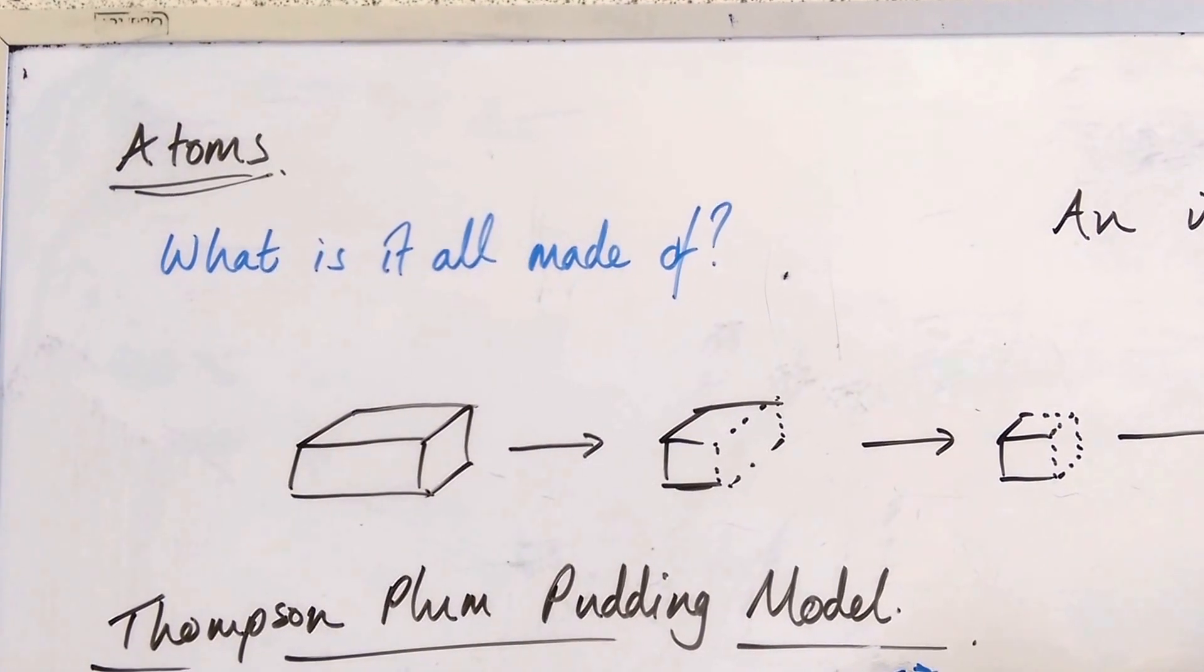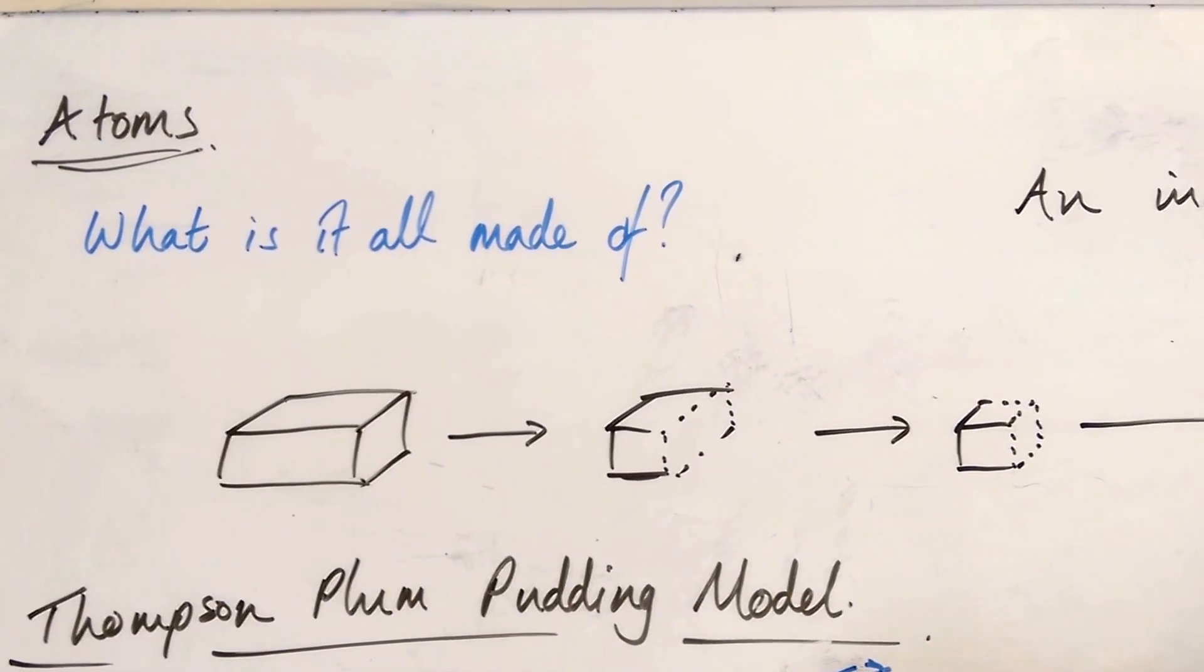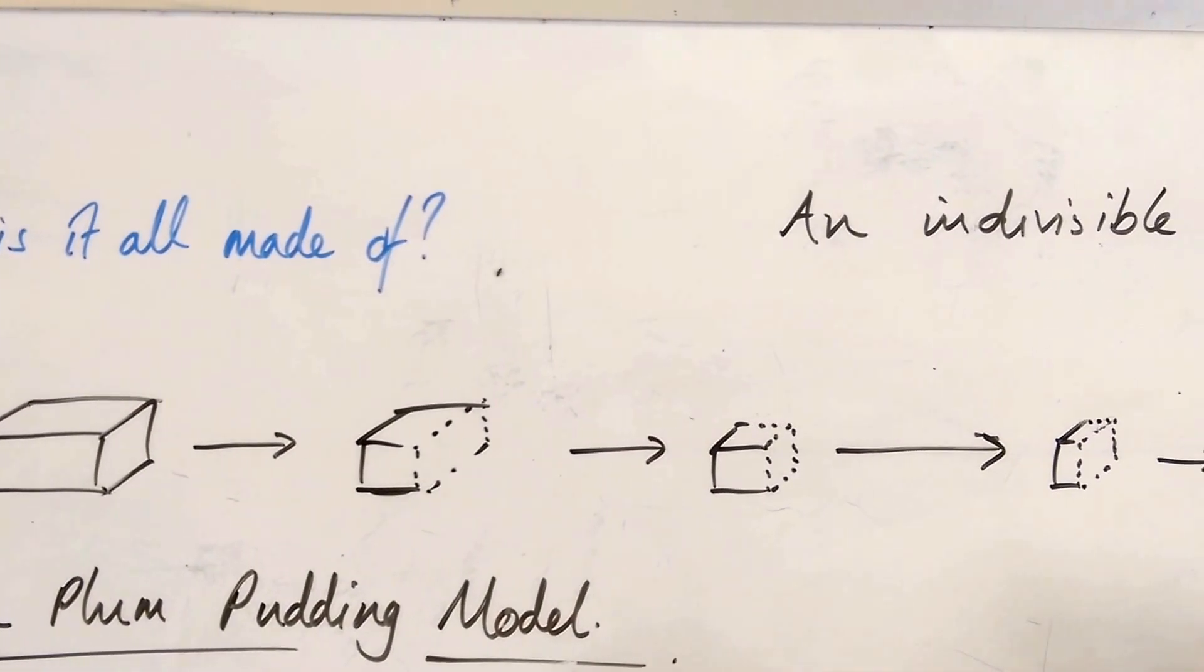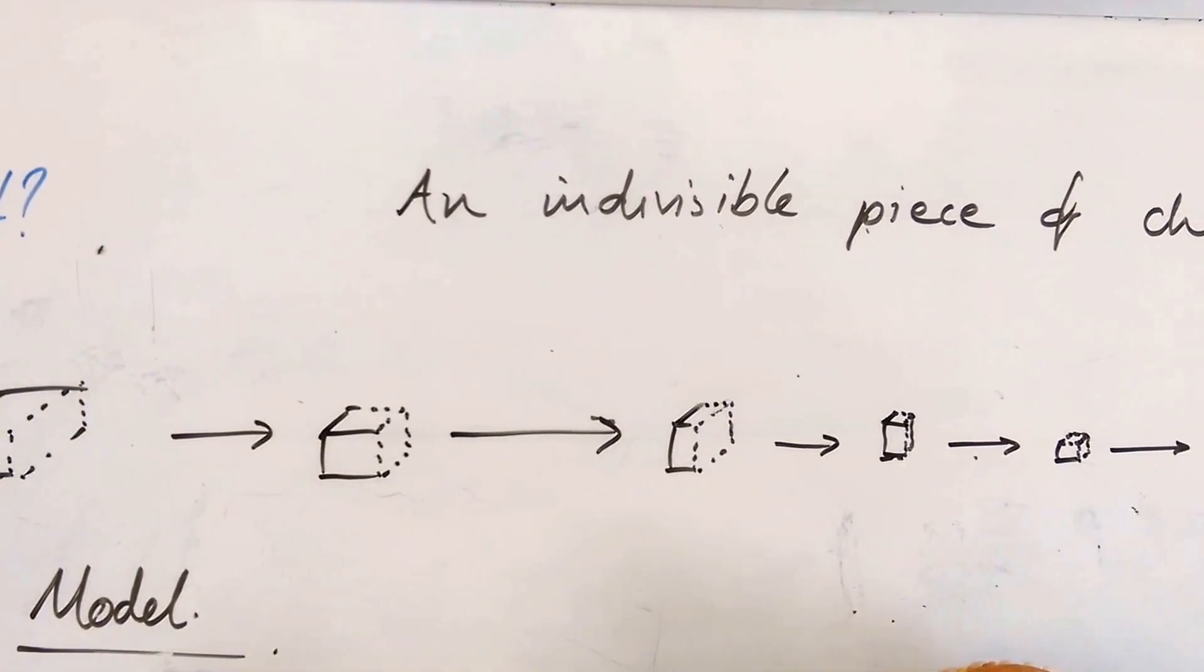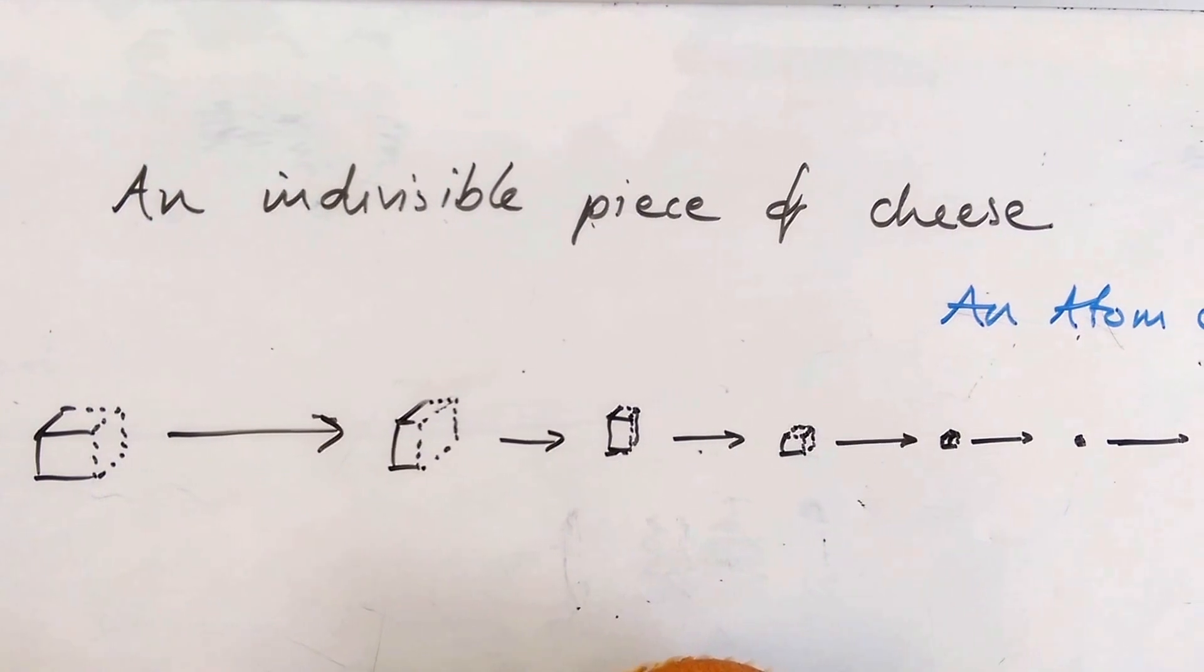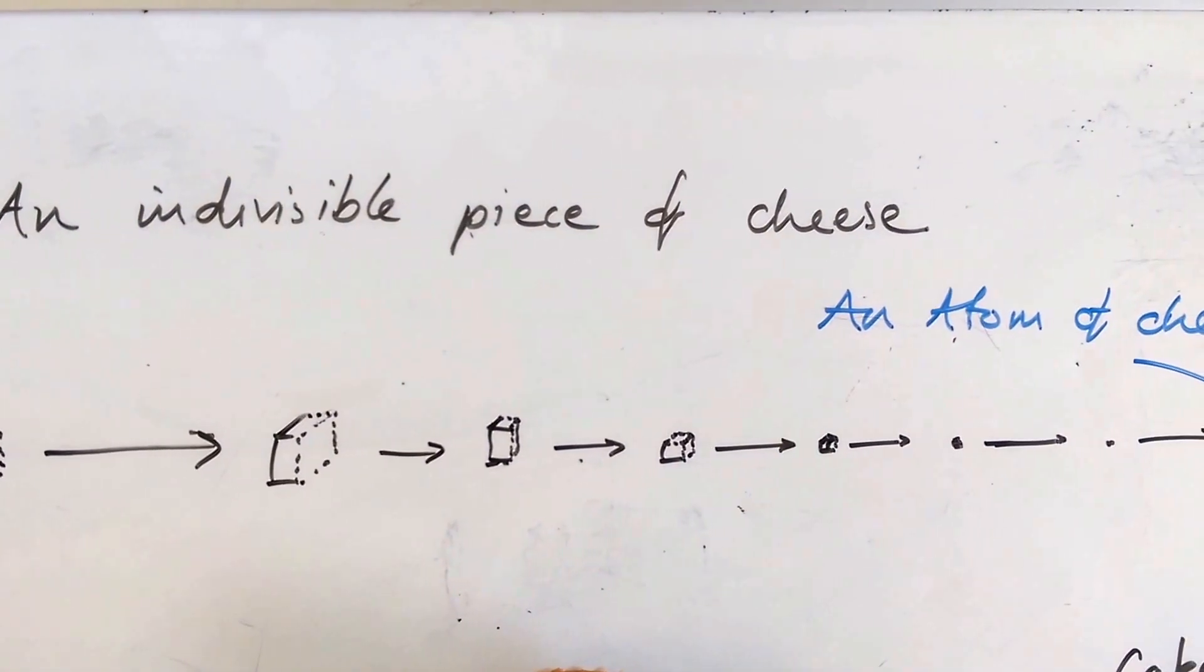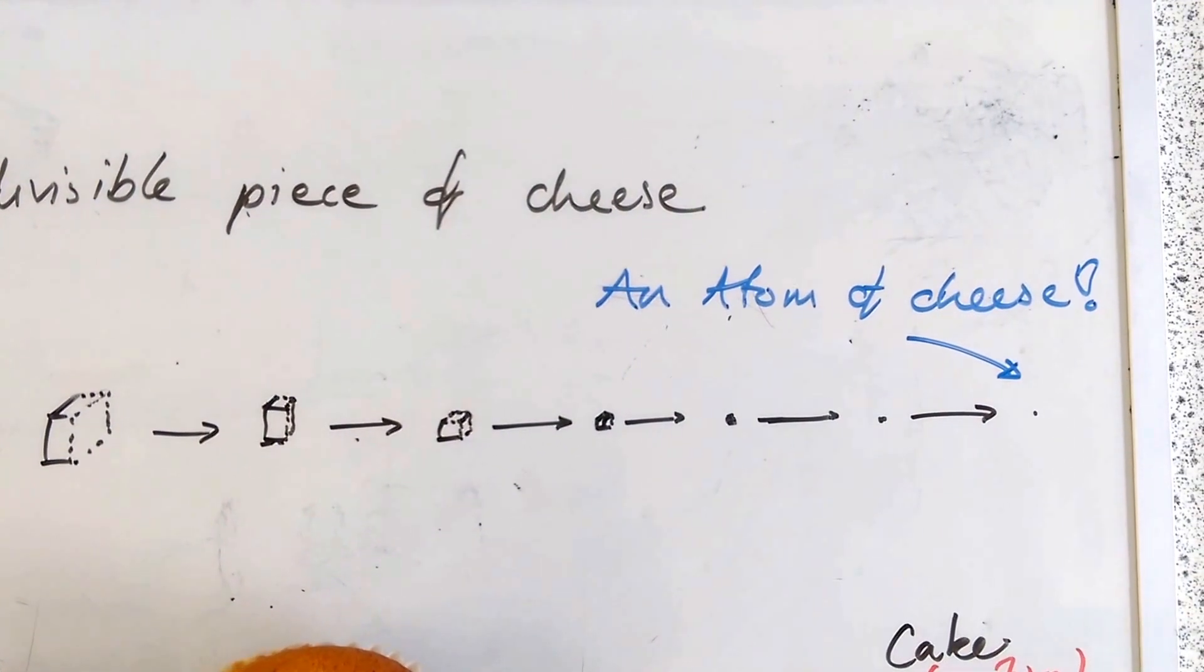Imagine taking a piece of cheese and chopping that piece of cheese in half. You've got half a piece of cheese. Now cut that half in half. You've got a quarter of cheese. Cut that in half, an eighth. Then a sixteenth, a thirty-two, and so on. And keep cutting that piece in half until you have a piece of cheese you can no longer cut up.